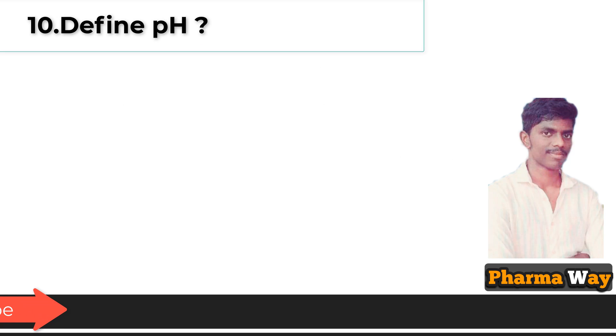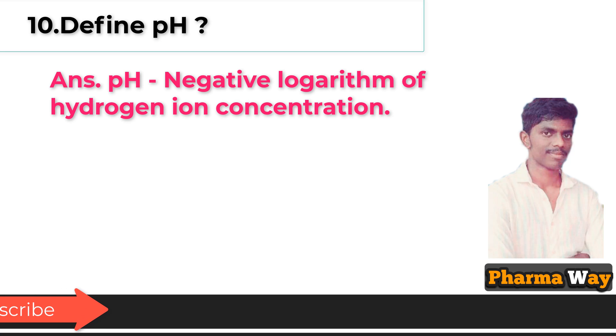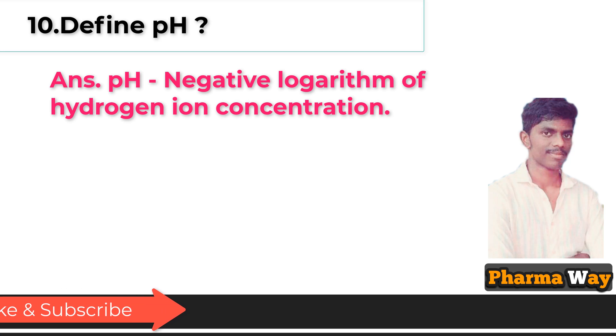Define pH. Answer: pH is the negative logarithm of hydrogen ion concentration.